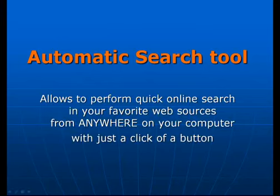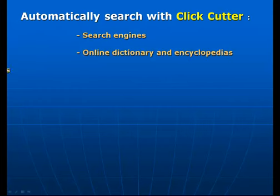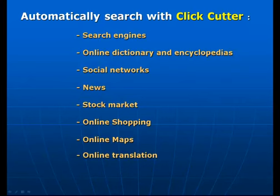Automatic search tool. This tool allows users to perform a very quick online search from anywhere with just a click of a button. You can quickly and easily get search results from favorite search engines, online encyclopedias, social networks, news, stock market, shopping sites, maps, translations, and many other favorite places. Because ClipCutter is a stand-alone tool, you never have to open a browser window again when you need to search the internet.